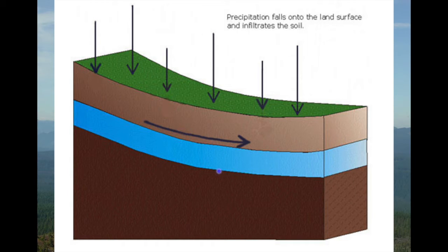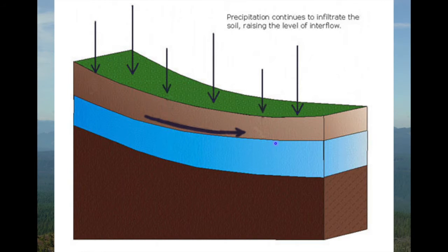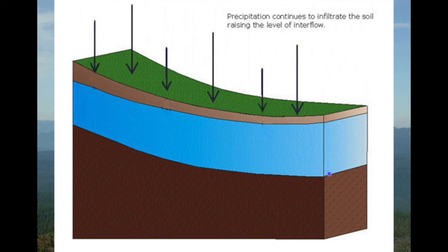So we get something that looks like this: precipitation falls at the land surface and infiltrates into the soil, but it can't keep moving vertically forever — maybe because of a bedrock interface or because of this decrease in hydraulic conductivity. So instead it starts to move downslope. As precipitation continues, this raises the water level and we get a saturated wedge developing on top of our low hydraulic conductivity interface. This is the development of subsurface storm flow.